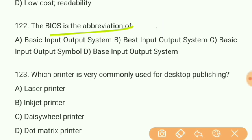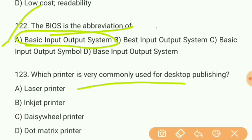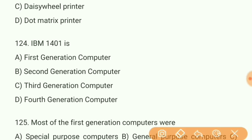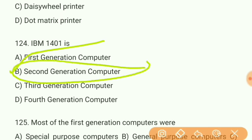Question 122: BIOS is the abbreviation for what? It is the abbreviation for Basic Input Output System — this is a primary thing you must know. Question 123: Which printer is very commonly used for desktop publishing? Answer A — laser printer. Question 124: IBM 1401 is what? Answer B — second generation computer.